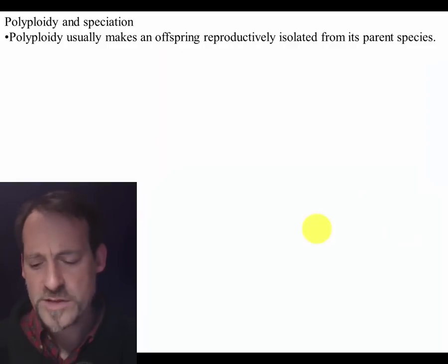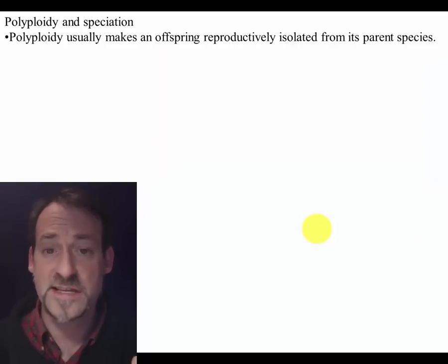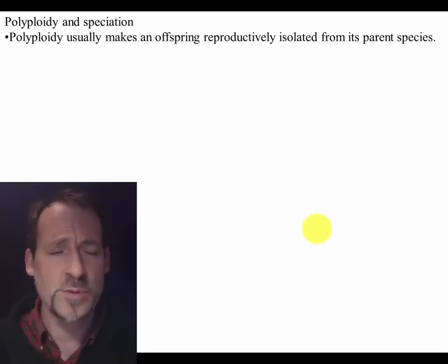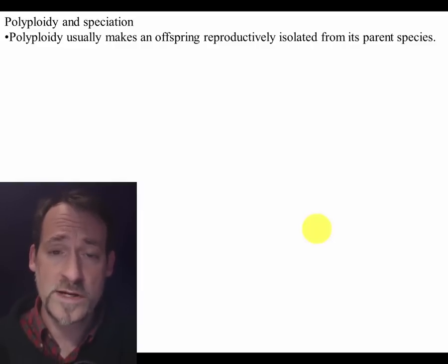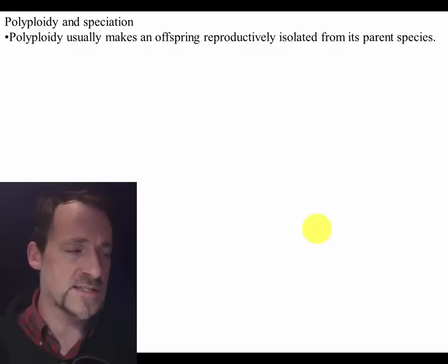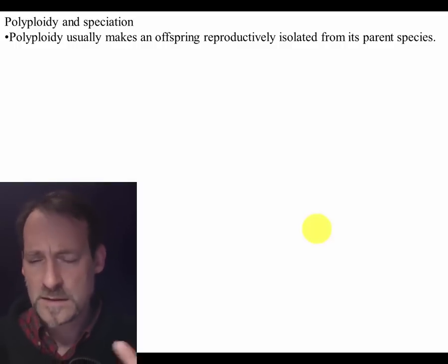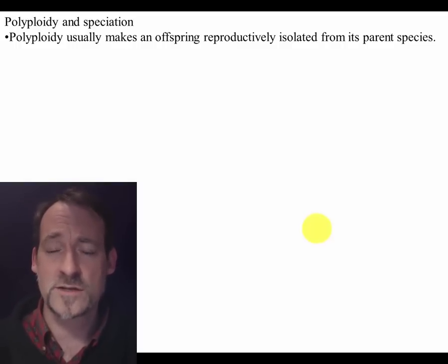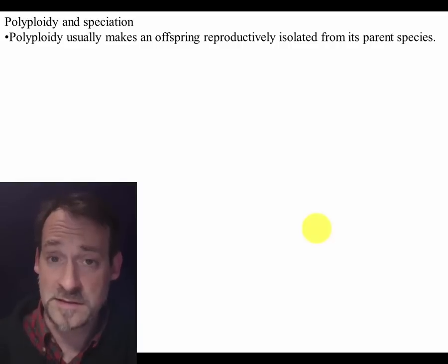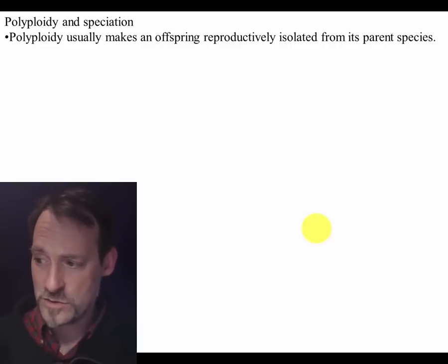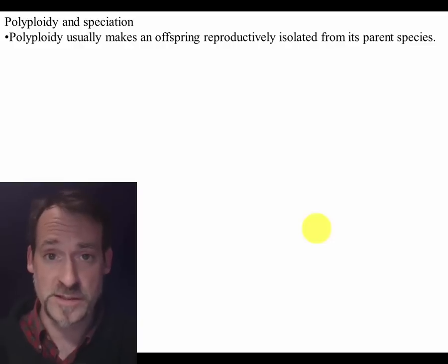So why would this offspring that has suddenly had its genome doubled be reproductively incompatible with its parent species that has not had the genome doubled? To understand why that is, let's take a look at what would happen in a mating between that new tetraploid offspring and the parent species.